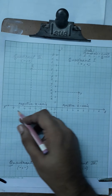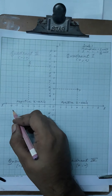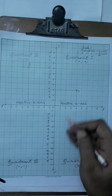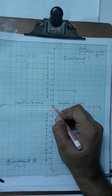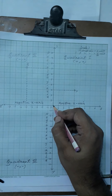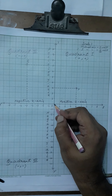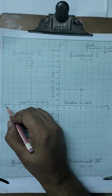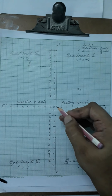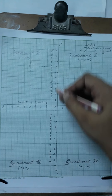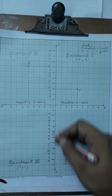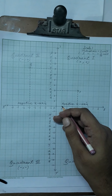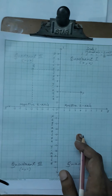Just as in a number line one part is positive and the other is negative with zero in the middle, similarly on the vertical axis also. The point where the two axes intersect each other perpendicularly is called the origin O. From O to X is the positive side of the x-axis, and from O to X' is the negative side of the x-axis.